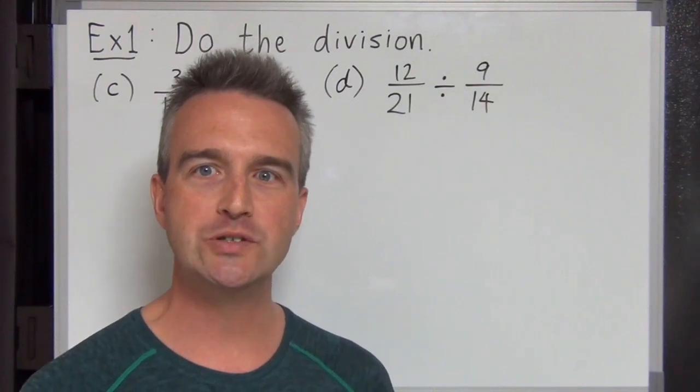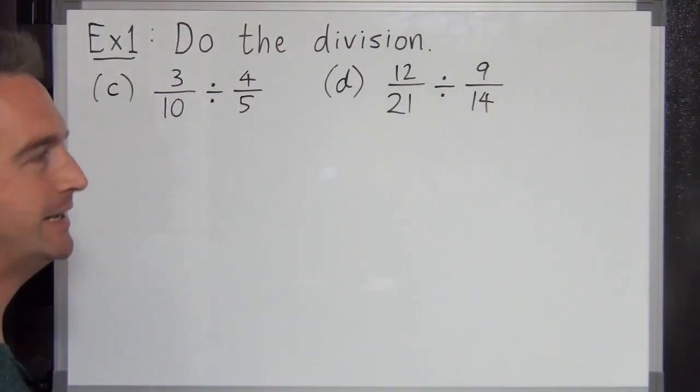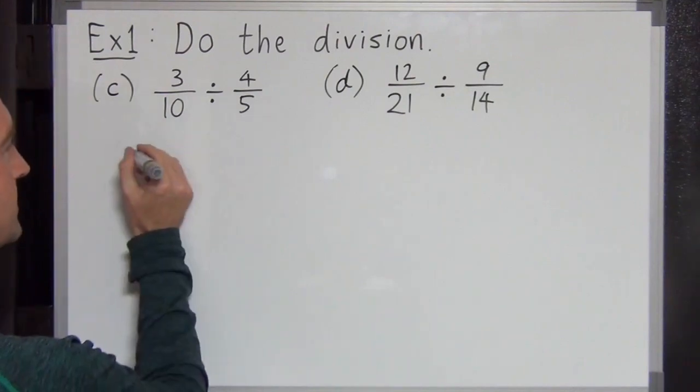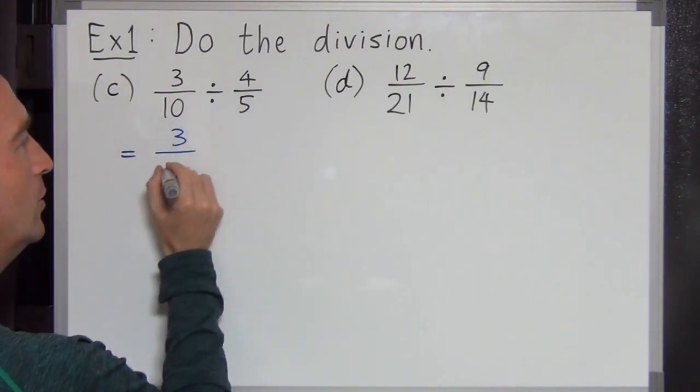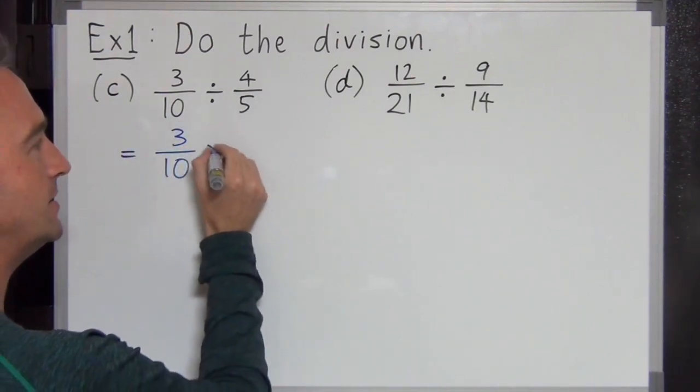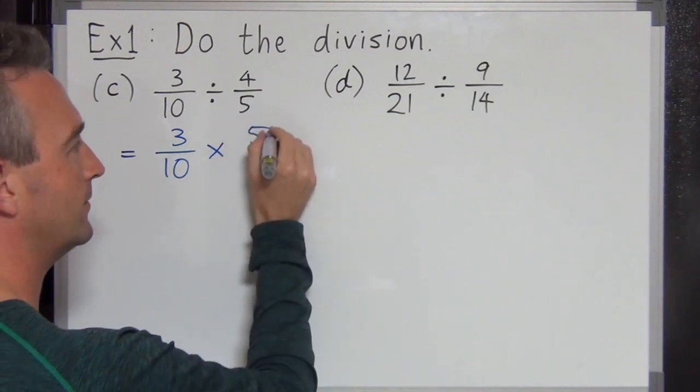Just a couple more and we should have the hang of it. Next one. 3 over 10 divided by 4 over 5. Let's give this a try. 3 over 10. Turn the divide into multiply and then 5 over 4.